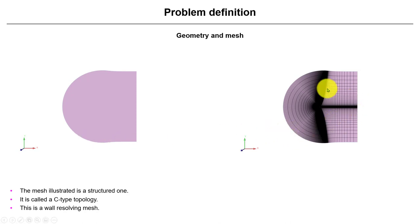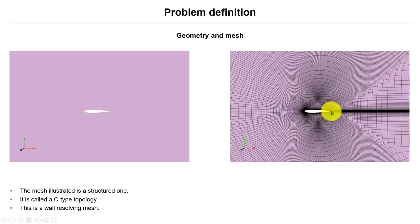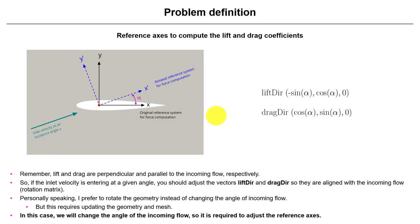So this is what is known as C-type topology mesh. So this is a wall-resolved mesh. It's a very good mesh. So I'm not going to address the technology behind this kind of meshes, but it doesn't matter if you have quads or tetra or triangles or whatever.